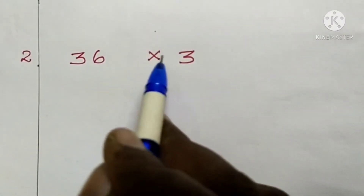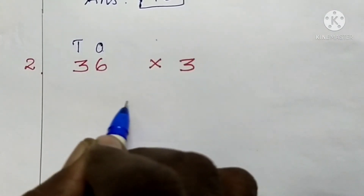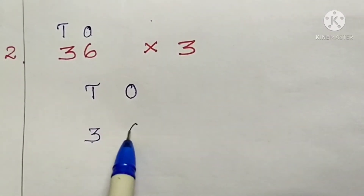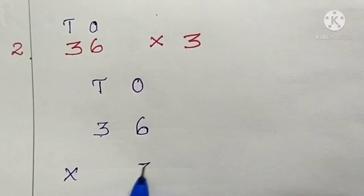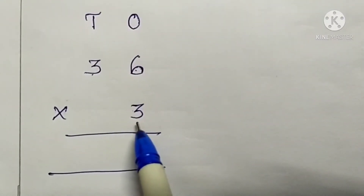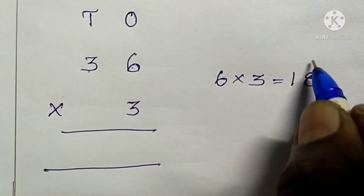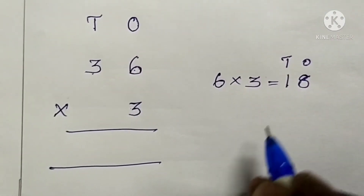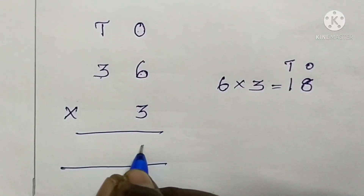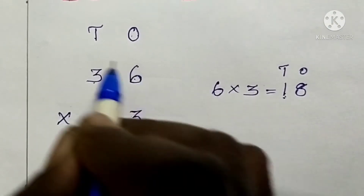Next, thirty-six multiplied by three. First, put the place value for the given number — ones, tens. Three tens, six ones, multiplied by three. Multiply the numbers at the ones place: six threes are eighteen. Because eighteen is a two-digit number, write eight under the ones place and carry one ten to the tens place.